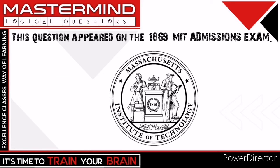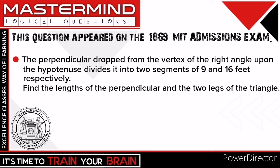Hello students, today we are going to discuss a question that appeared in the MIT admissions exam. MIT from Cambridge, United States, ranks as one of the top universities in the world. The question is: the perpendicular dropped from the vertex of the right angle upon the hypotenuse divides it into two segments of 9 and 16 feet respectively. Find the length of the perpendicular and the two legs of the triangle.